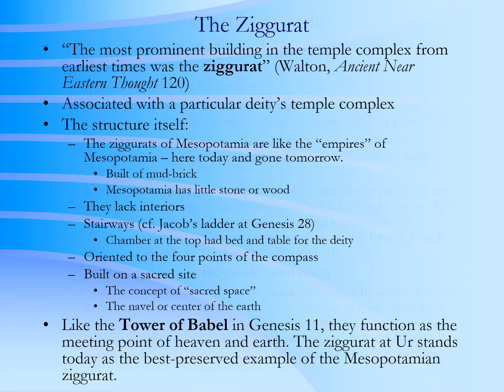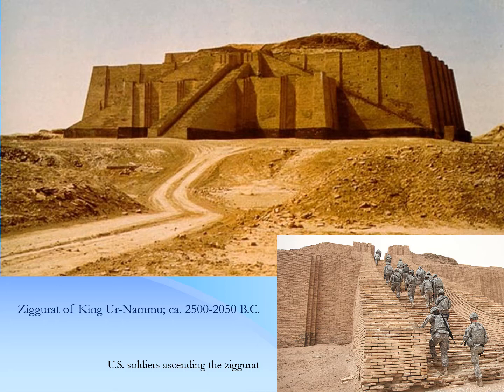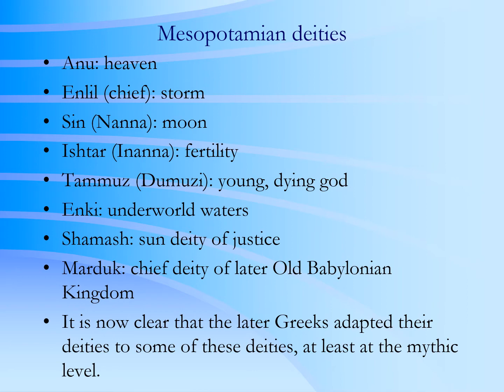The most spectacular architectural achievement of the Sumerians was the ziggurat, a pyramid-like structure. Here's a list of some of the more noteworthy deities of the Mesopotamians. You'll see sometimes two names here — one name is the Sumerian, the other is the more Semitic Akkadian. Very well known here is the goddess Ishtar, the goddess of fertility. We'll encounter the god Shamash in a little bit, the sun deity, the sun god.